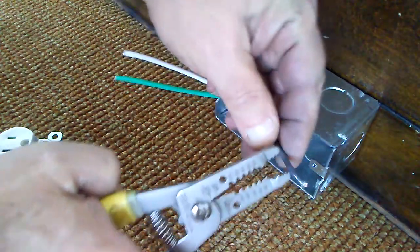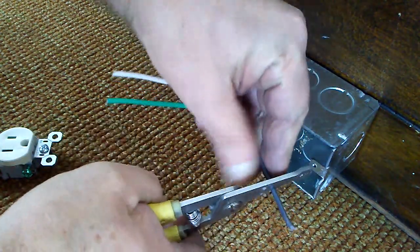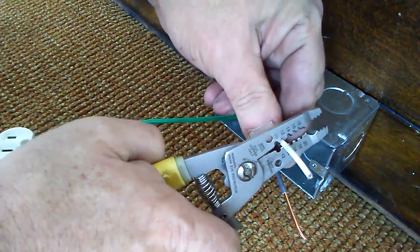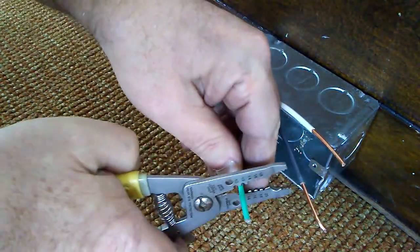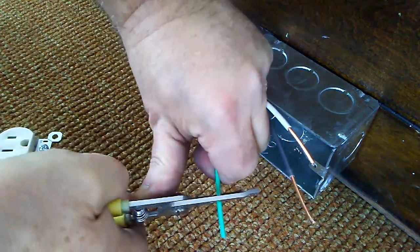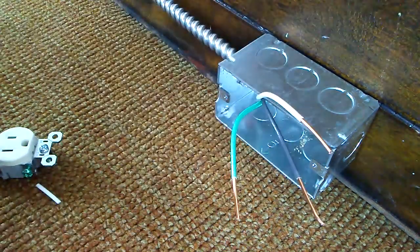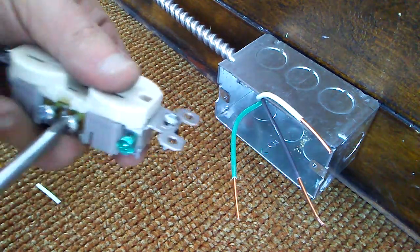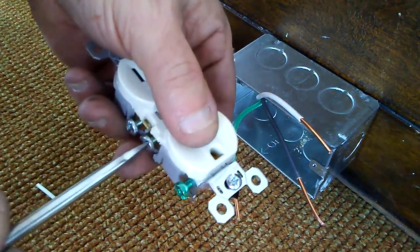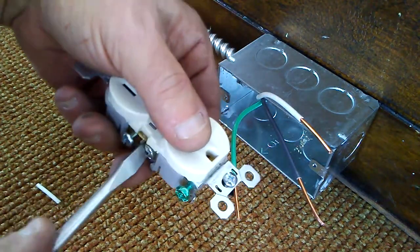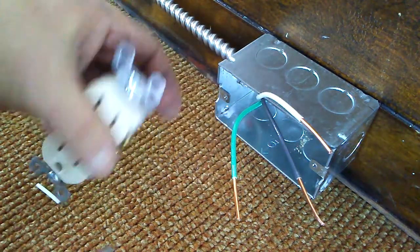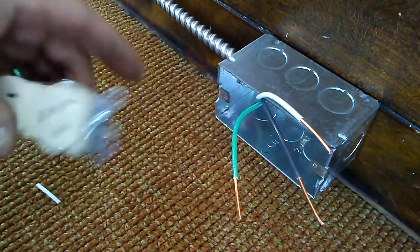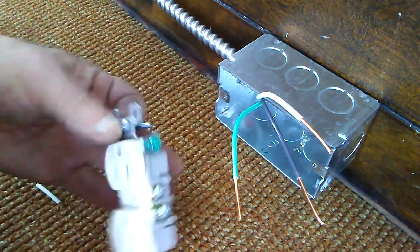We're going to strip our wires. This is number 12, and we're going to strip them in the number 12 hole. We're going to close the screws we're not going to be using so they don't touch anything.